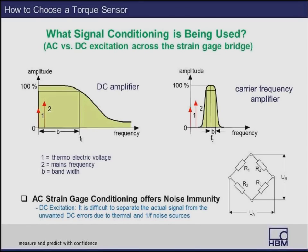What kind of signal conditioning is being used on the torque sensor — AC excitation across the Wheatstone bridge or DC excitation? At HBM, we recommend AC strain gauge conditioning. It is much more noise-immune than DC strain gauge conditioning. AC excitation minimizes errors that DC can cause, such as errors due to thermal or 1/f noise sources. It is always good to know what kind of strain gauge conditioning is used to excite the Wheatstone bridge.